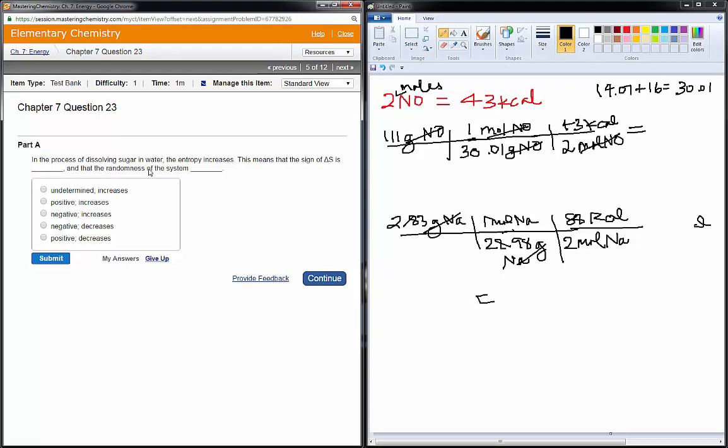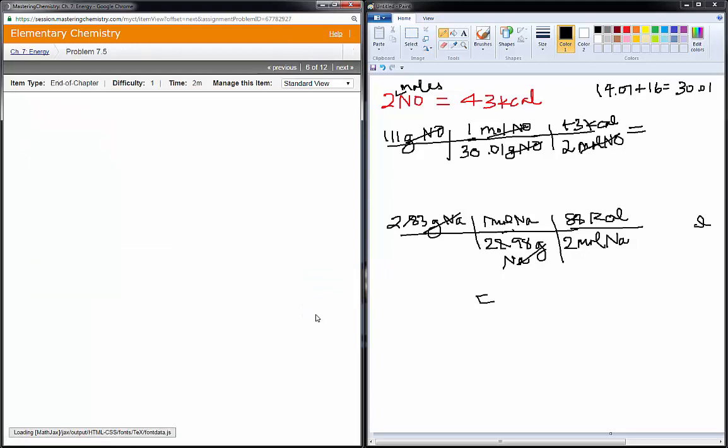And that is exothermic, because the delta H is negative. Next, in the process of dissolving sugar in water, the entropy increases. That means the sign of delta S is positive. Positive means entropy decreases, and the randomness of the system increases. So, knowing what those signs are and what those mean, that's an important part of this chapter.